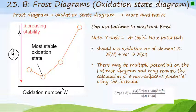We are going to use the oxidation number of a specific element X. The new value is the number of electrons transferred to form an oxidation state starting from oxidation state zero. There may also be multiple potentials on a Latimer diagram, and often we will need to use a Latimer diagram to construct a Frost diagram. You may have to calculate a non-adjacent potential using the formula shown.